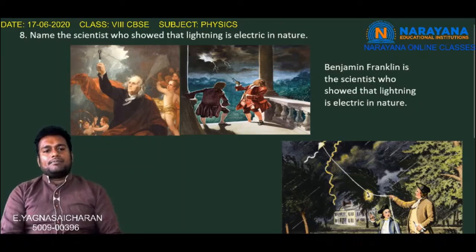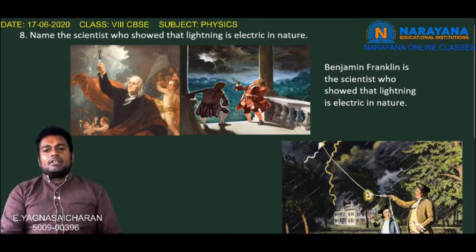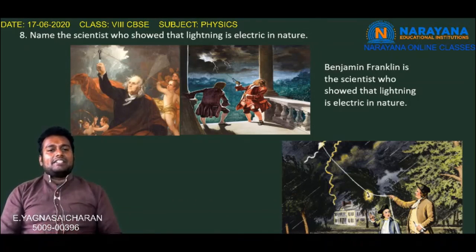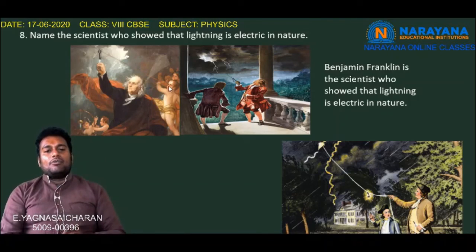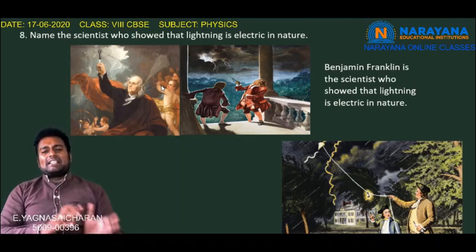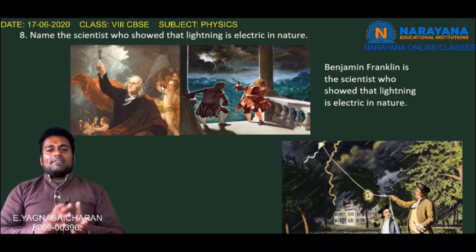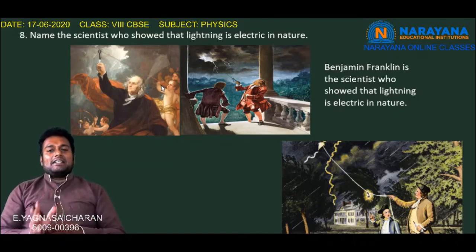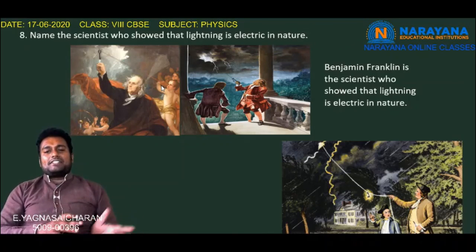Let us see the eighth question: Name the scientist who showed that lightning is electrical in nature. Benjamin Franklin is the scientist who showed that lightning is electrical in nature. He flew his kite using a very thin copper wire and found that the high voltage discharge from lightning is completely electrical in nature. Through his kite experiment with the copper wire, Benjamin Franklin proved that lightning is electrical in nature.